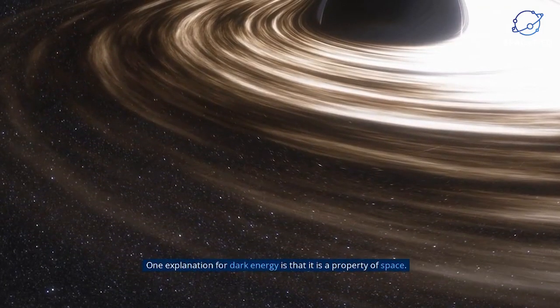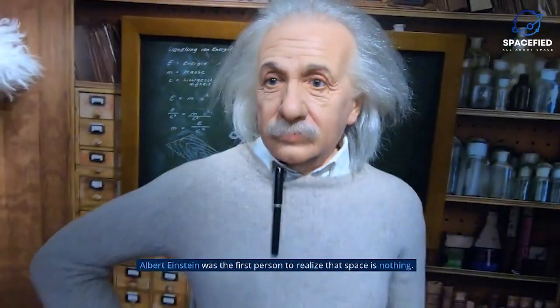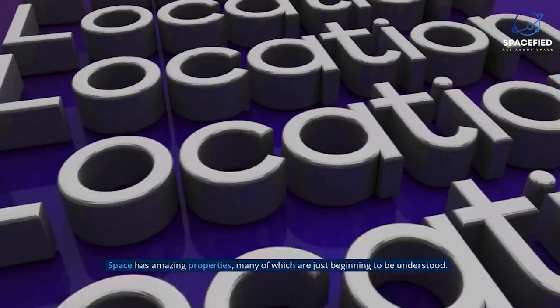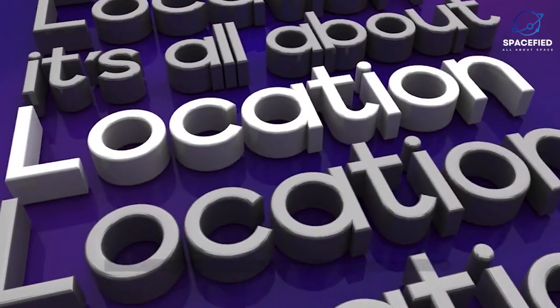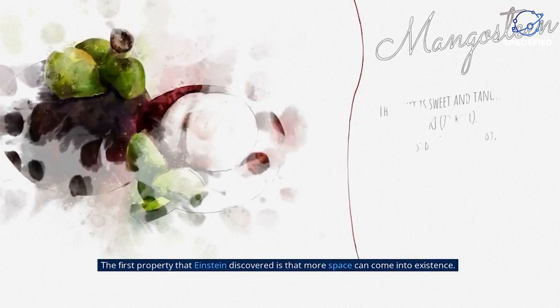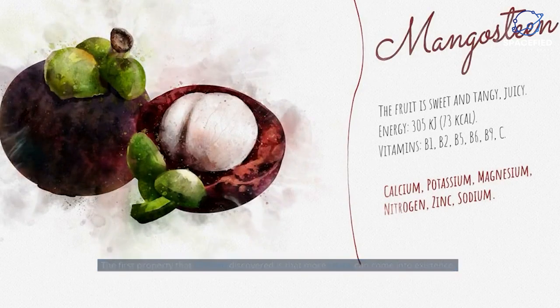One explanation for dark energy is that it is a property of space. Albert Einstein was the first person to realize that space is nothing. Space has amazing properties, many of which are just beginning to be understood. The first property that Einstein discovered is that more space can come into existence.